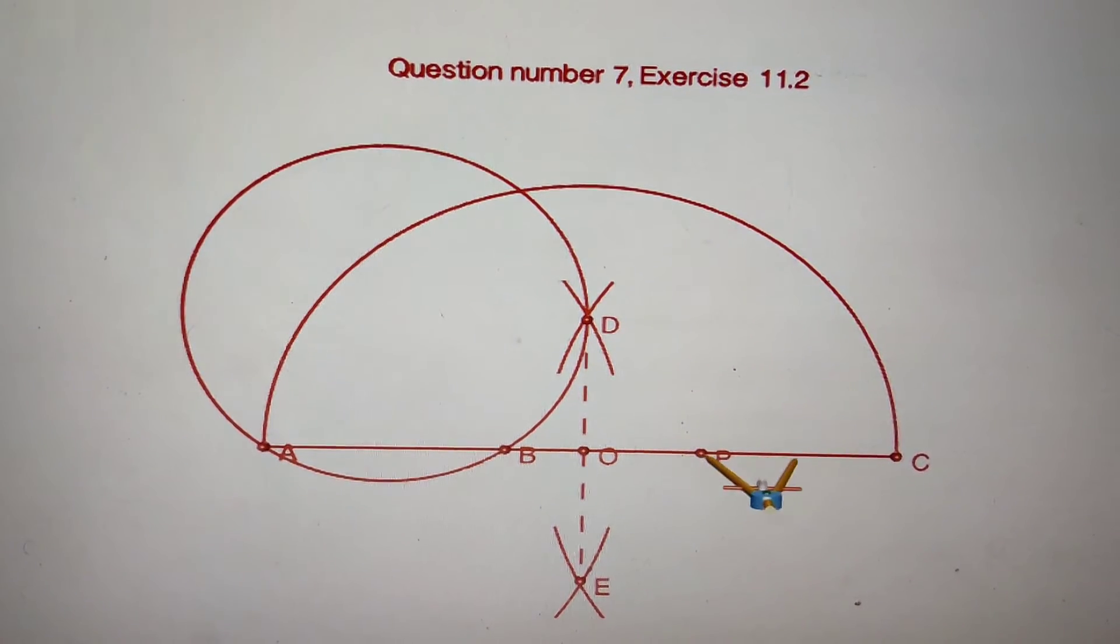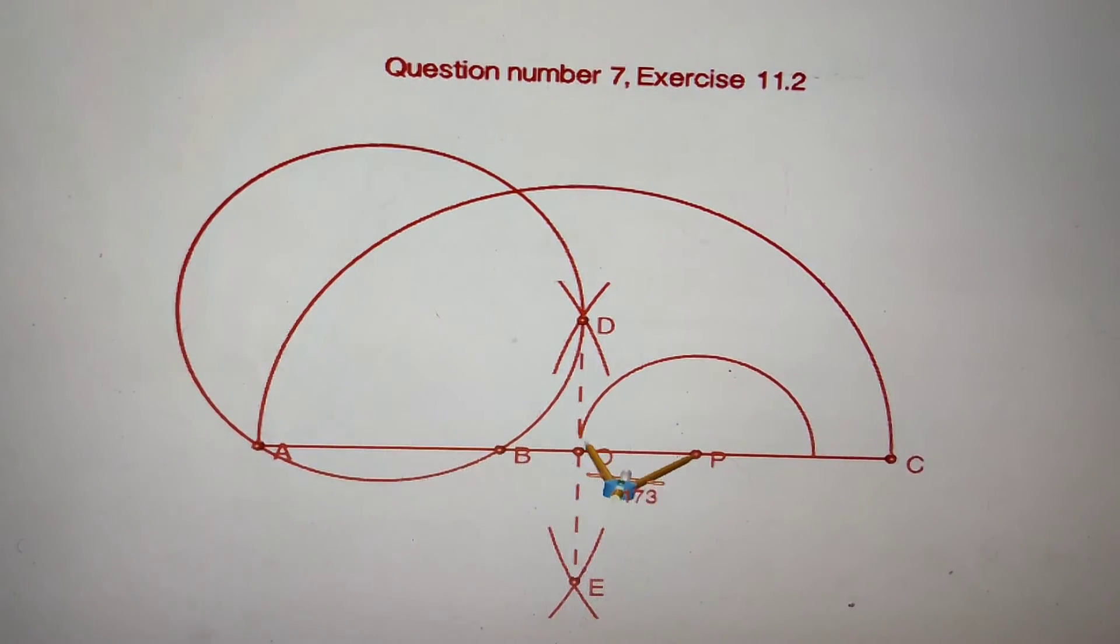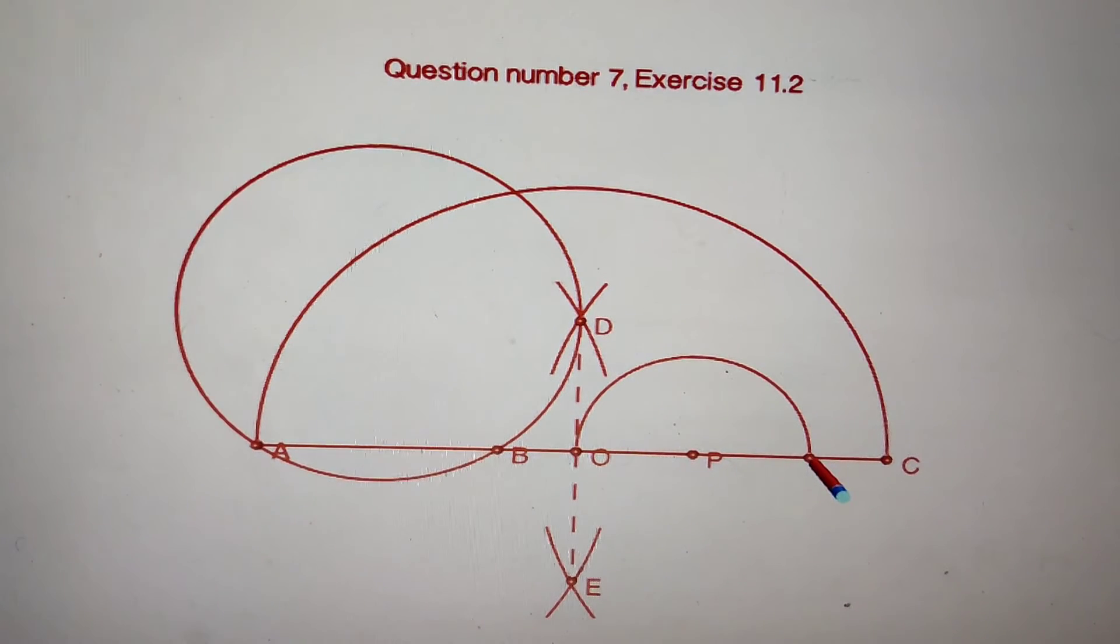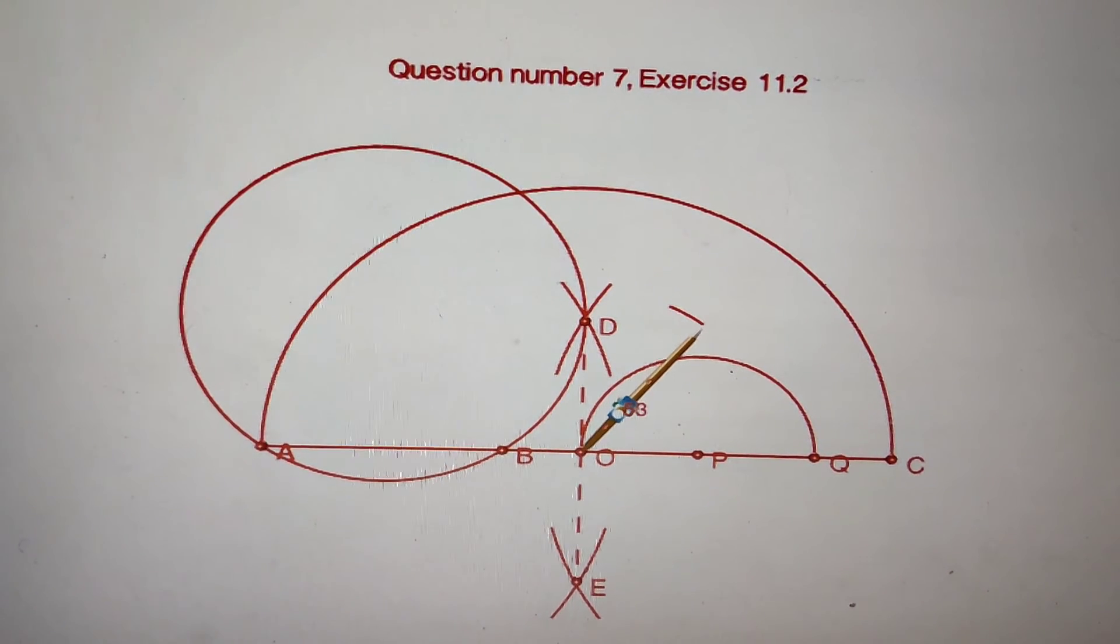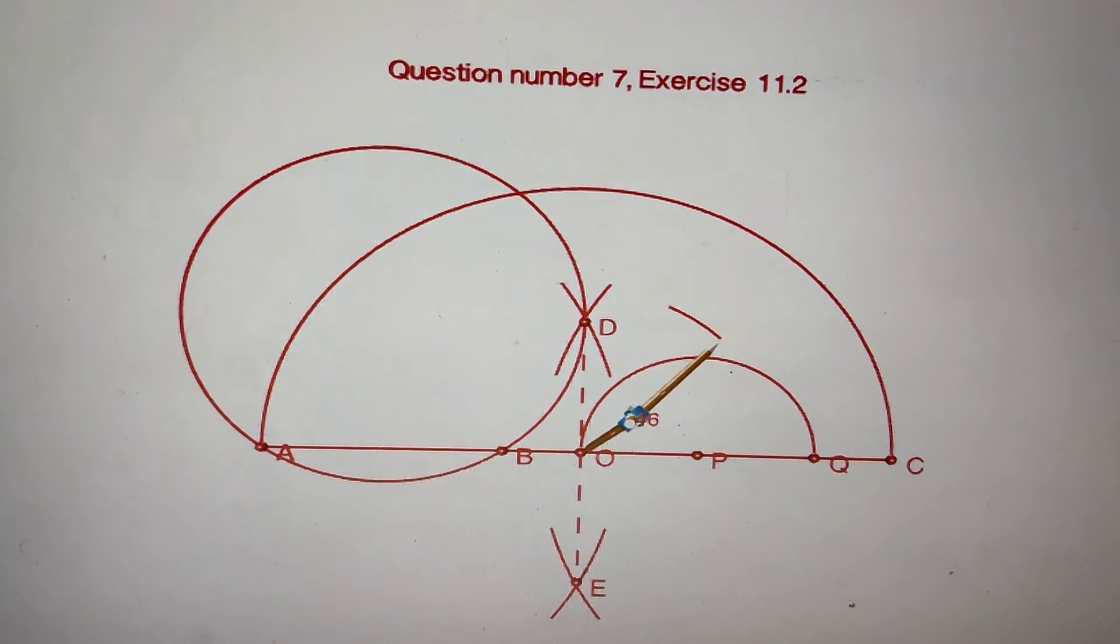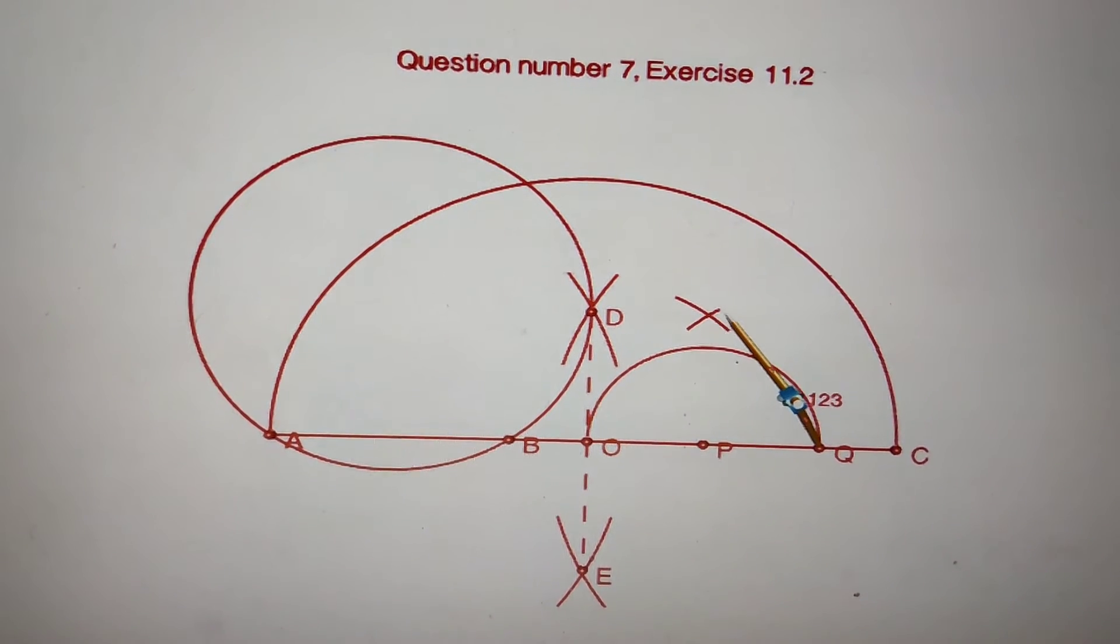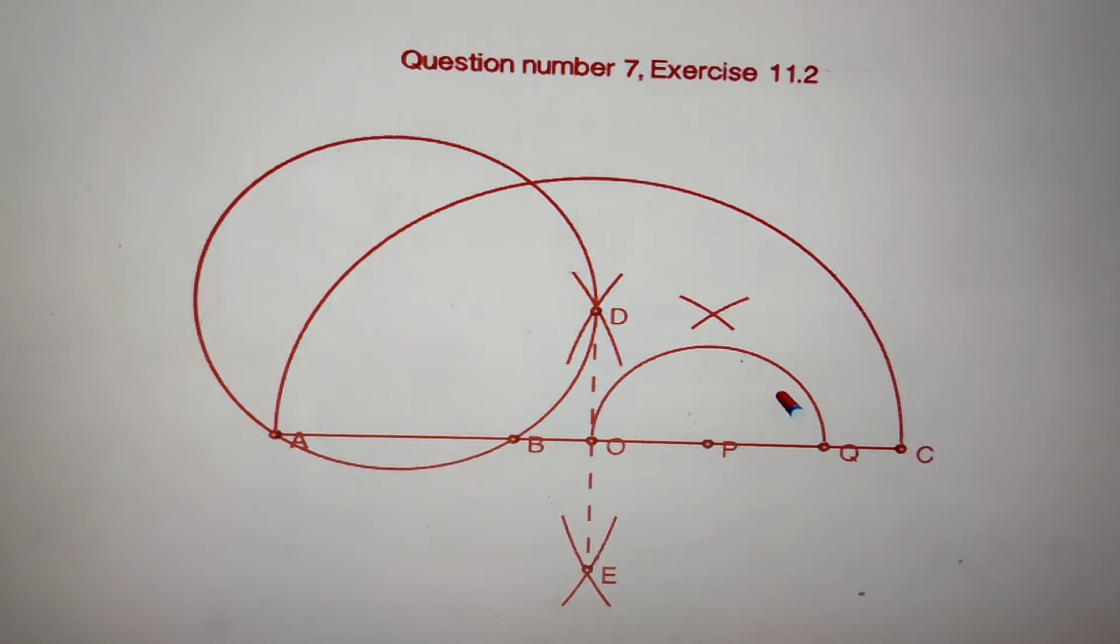Now draw a perpendicular on point P. Make an arc of semicircle type and cut equal arcs from these two points. This will be the perpendicular on point P.